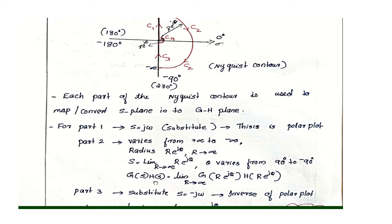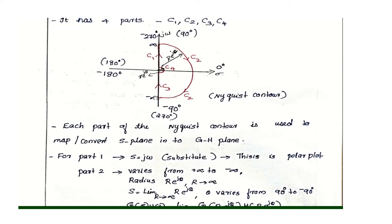We substitute S equals R times e raised to j theta, with R tending to infinity. We compute the magnitude value and phase value for C2. The third part is C3, which is the reverse of C1. C1 goes from 0 to infinity, and C3 goes from minus infinity to 0.